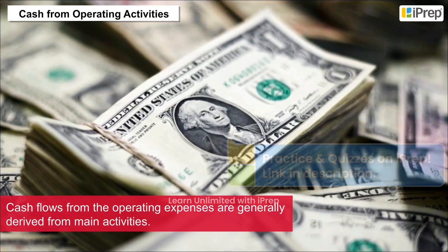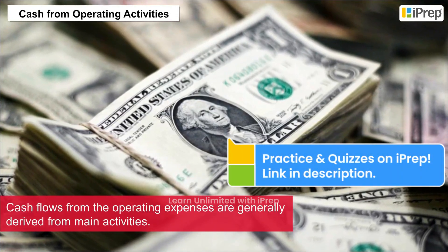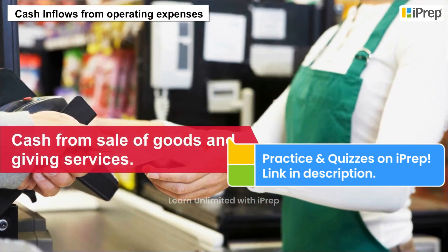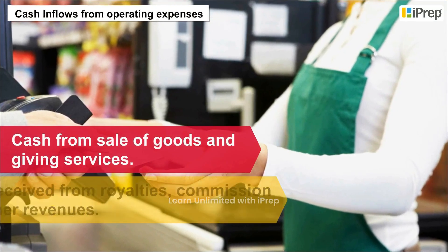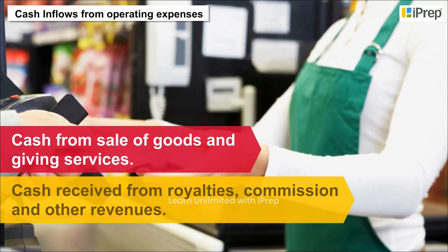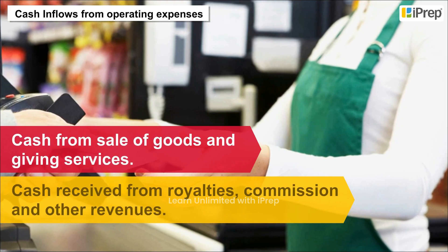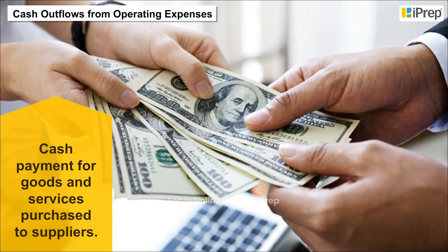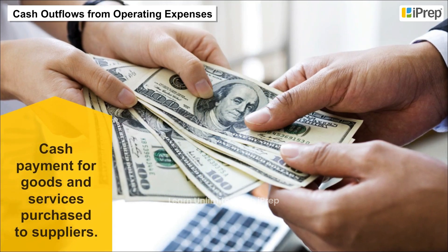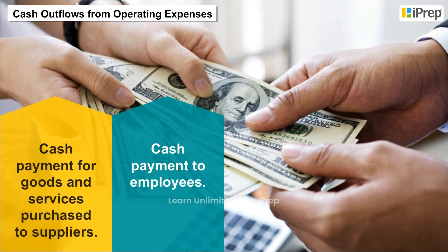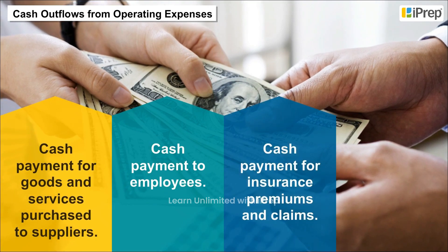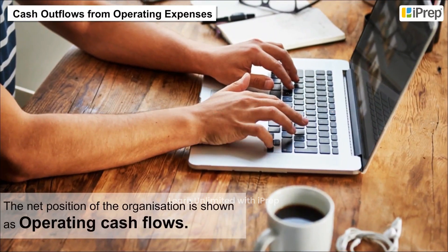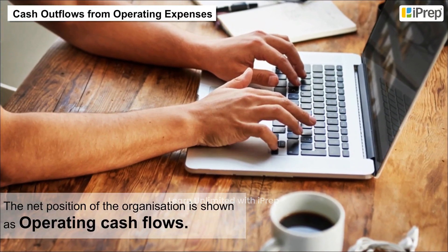Examples of cash flows from operating activities are as follows. Cash inflows include: cash from sale of goods and services, cash received from royalties, commission, and other revenues. Cash outflows include: cash payment for goods and services purchased from suppliers, cash payment to employees, cash payment for insurance premiums and claims, and cash payment for tax. The net position of the organization is shown as operating cash flows.